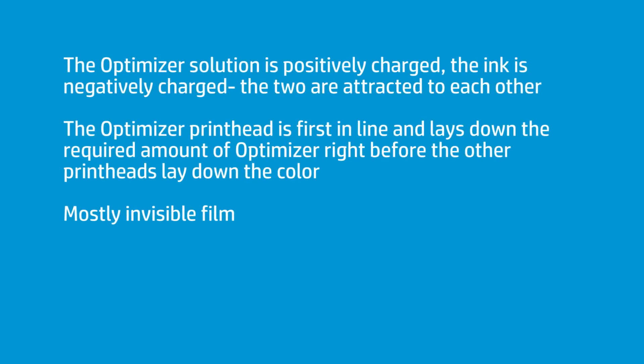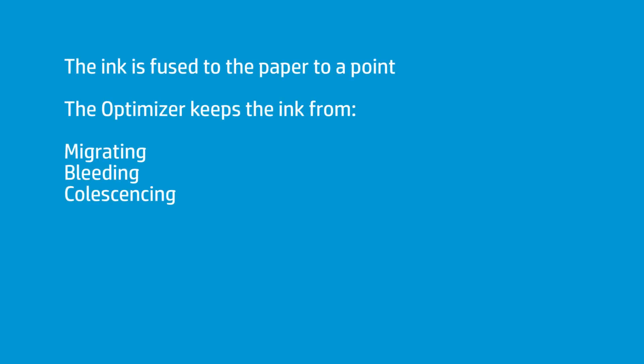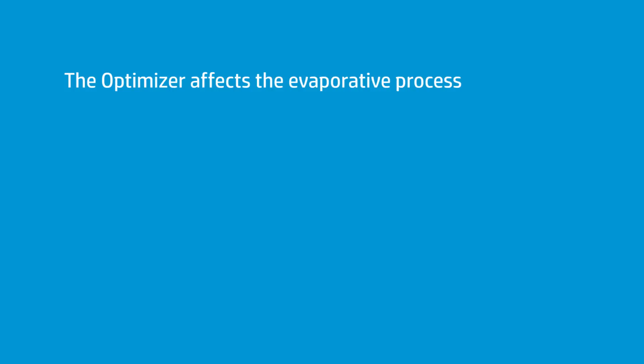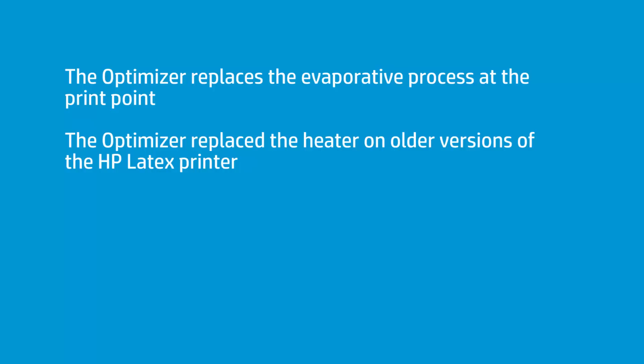Essentially, the Optimizer is a positively charged solution, and the inks are negatively charged — they're attracted to one another. The Optimizer has its own printhead, and it is treated just like an ink. That printhead is out a little bit in front of the other printheads. The Optimizer, which is a mostly invisible film — a solution — goes down onto the material first, and the ink is attracted to it. The Optimizer brings that ink and fixes it to a point, preventing the ink from migrating, bleeding, and coalescing.